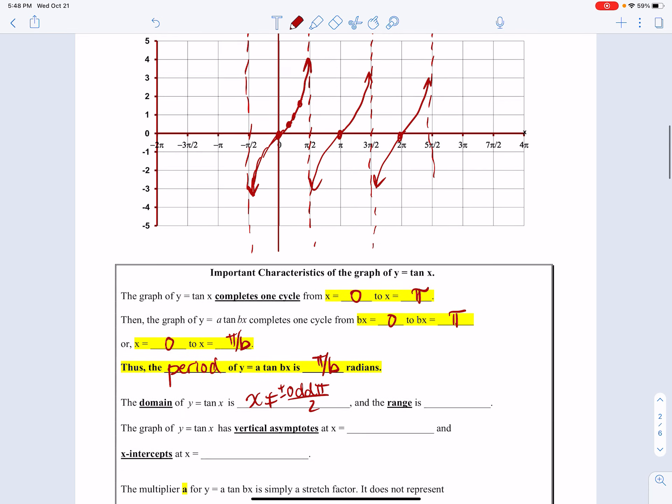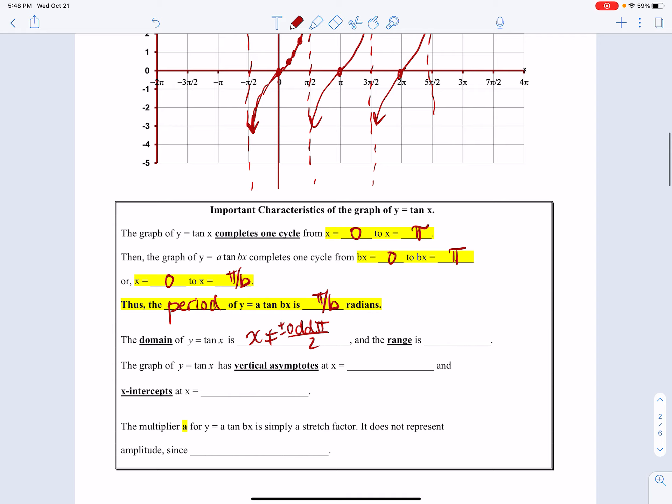The range, however—you can get huge negative or positive numbers. The range is all real numbers, represented by negative infinity to infinity. Another way of representing odd numbers is x ≠ (2k+1)π/2, where k is an integer. So 2k+1 represents an odd number. If k is any integer, multiplying by 2 makes it even, and adding 1 makes it odd. That's just a fancy way of writing odd integer.